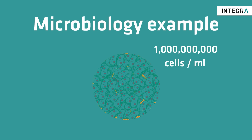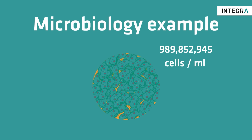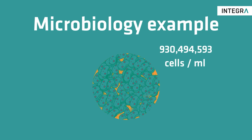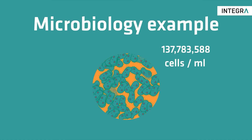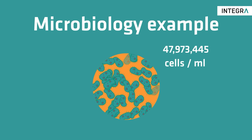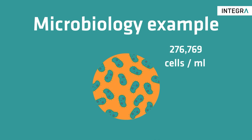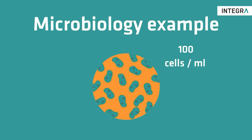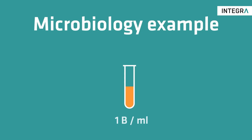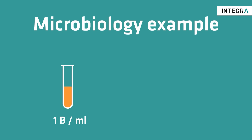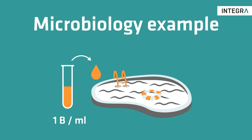This is why you have to dilute a small portion of your bacterial culture until you get a more easily countable concentration of 30 to 300 bacterial cells per milliliter. To get to such a low concentration from a sample with one billion bacteria per milliliter in one step, you would need to dilute one milliliter of the sample in 10,000 liters of diluent.